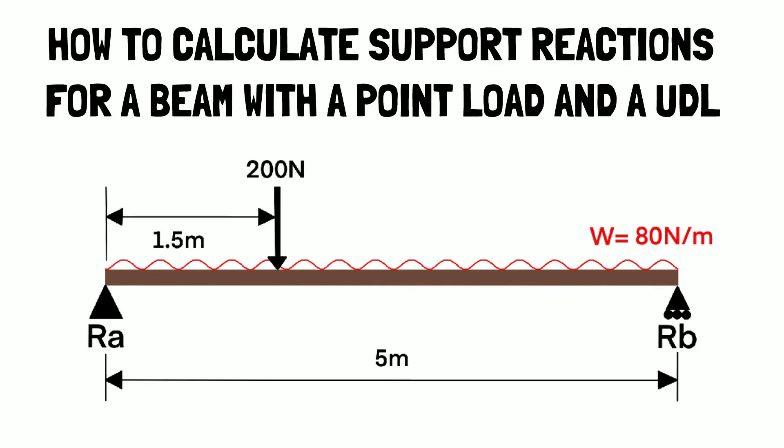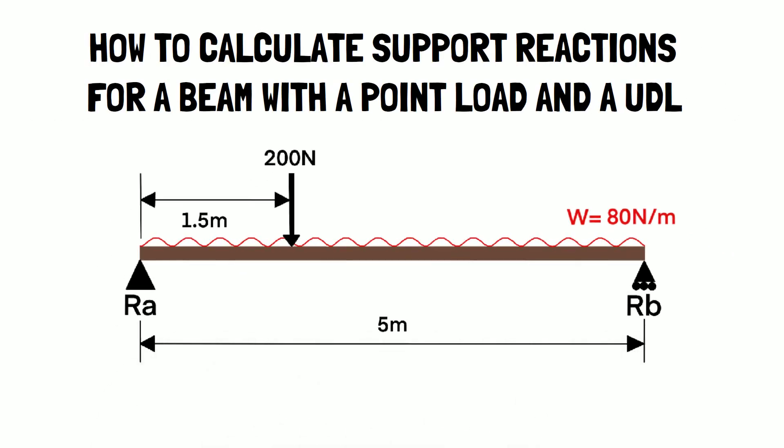If we look at the beam, we can see that it is 5 meters in length and has supports at either end labeled RA and RB. It has a uniformly distributed load of 80N per meter applied across the whole beam. It also has a 200N load applied 1.5 meters from the left.